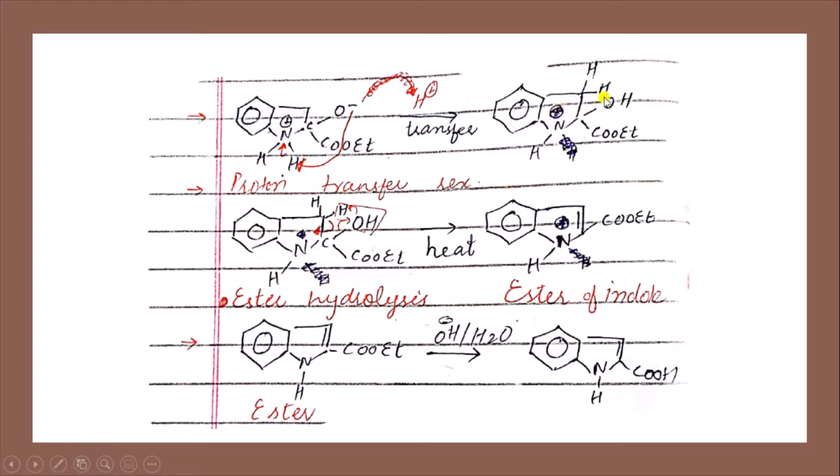This was the proton transfer reaction which has just taken place. In the next step, we will heat this product. As a result, the H and OH group will be removed, and the proton will transfer in the ring. There we get an ester of indole.